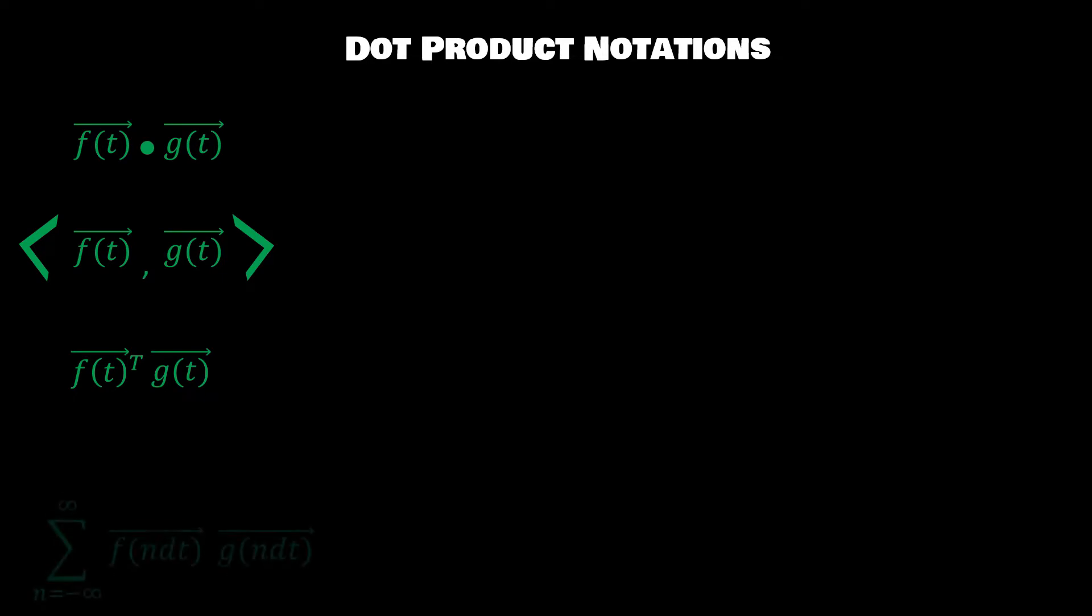Well, now that we can turn functions into vectors, we can do vector-ish things to them. And of course, we can scale vectors, we can add them, but we can also take dot products between vectors. There's a lot of ways to represent the dot products. We can smack this big circle of the two functions, we can put these brackets around them, we can take the transpose of one of those vectors and matrix multiply it with the other vector.